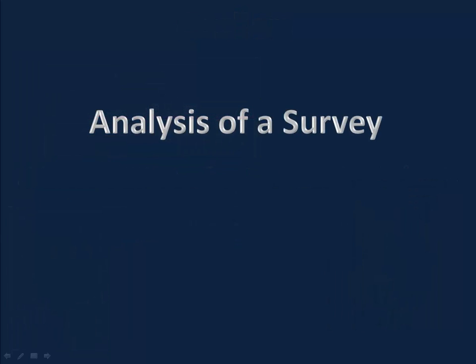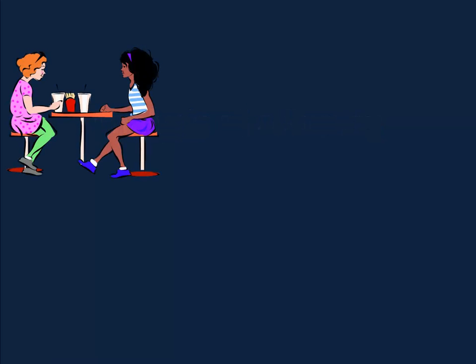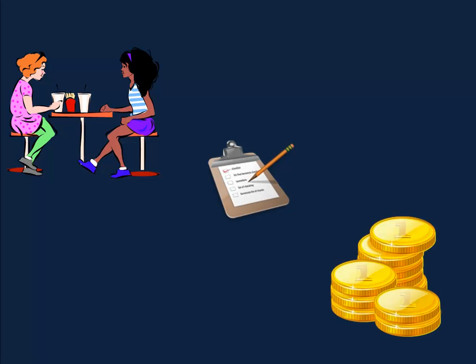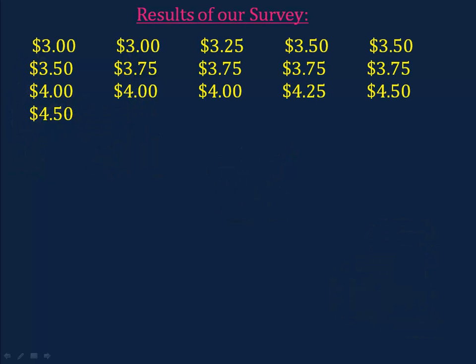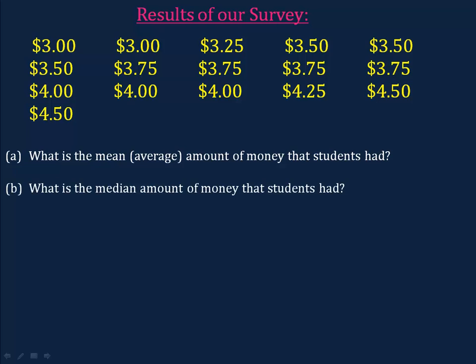And here's the moment you've been waiting for, your opportunity to work with the mean and the median. Suppose we want to find out the typical amount of money that students bring to school. We go to the cafeteria and we conduct a survey. We ask 16 random people how much money they have on them and we record the results. Here they are. The first thing we want to do is calculate the mean or average amount of money that each student has. Then we want the median amount of money that students have.